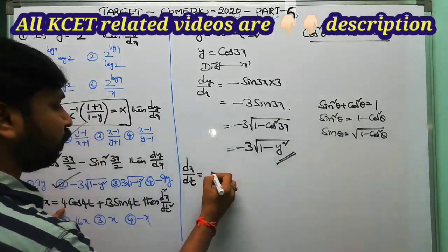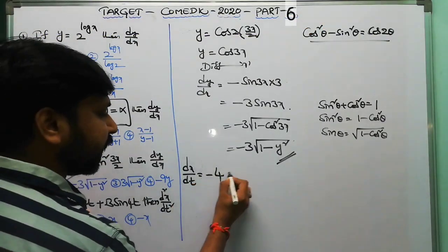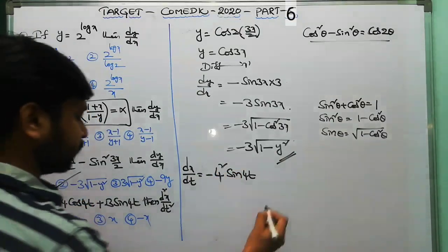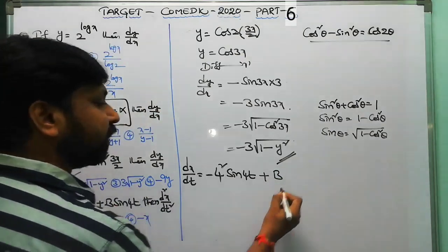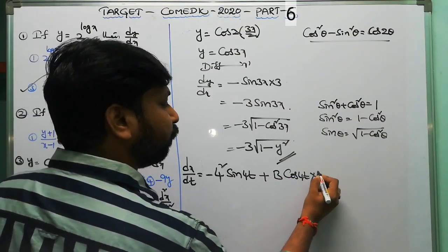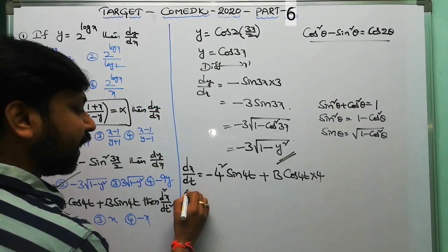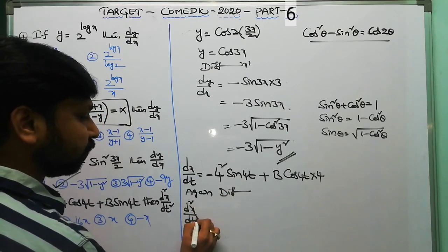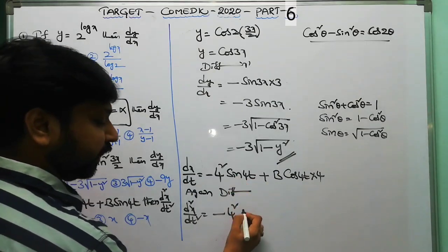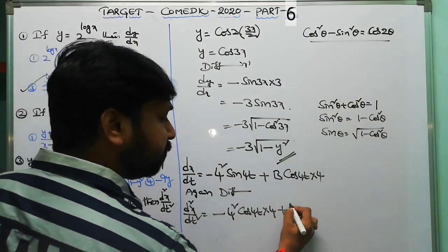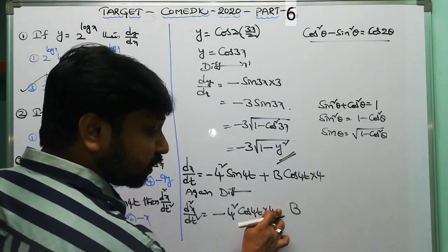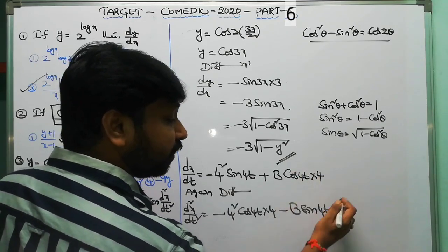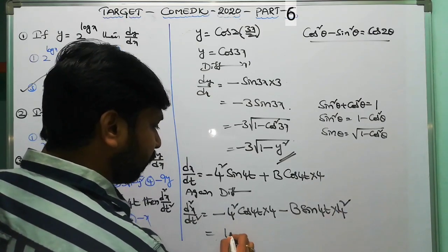For question 4, x equals a·cos(4t) and y equals b·sin(4t). Finding dx/dt: dx/dt equals a times the derivative of cos(4t), which is −sin(4t) times 4. For the second derivative, d²x/dt² equals −4² times sin(4t) derivative cos(4t) times 4, plus b times cos(4t) derivative −sin(4t) times 4, giving a 4² factor.